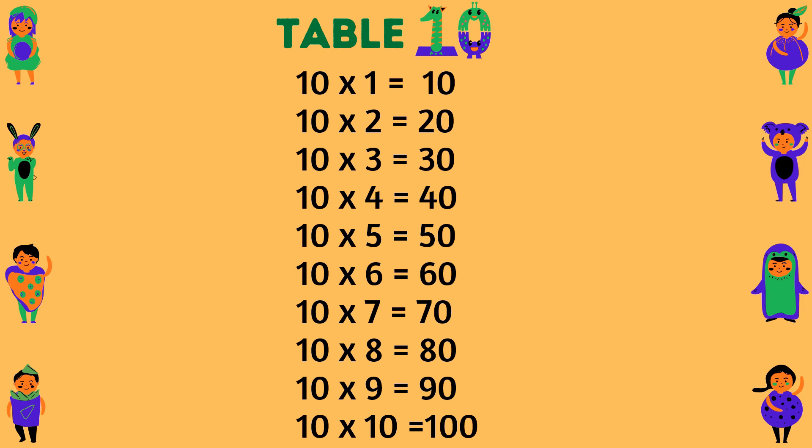Table of 10. 10 times 1 equals 10. 10 times 2 equals 20. 10 times 3 equals 30. 10 times 4 equals 40. 10 times 5 equals 50. 10 times 6 equals 60. 10 times 7 equals 70. 10 times 8 equals 80. 10 times 9 equals 90. 10 times 10 equals 100.